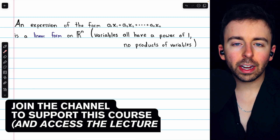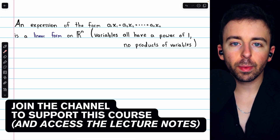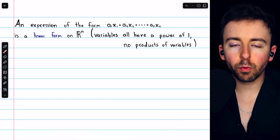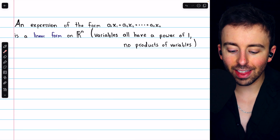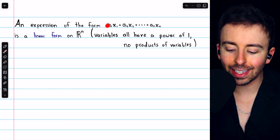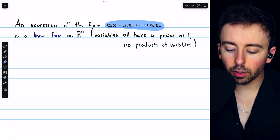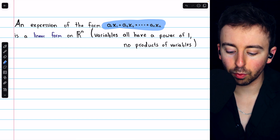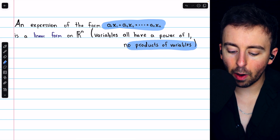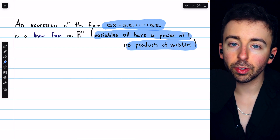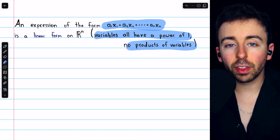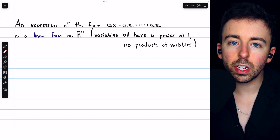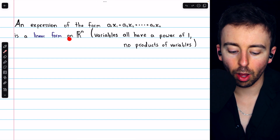We're going to introduce quadratic forms and how to write them in matrix notation. Before we look at what a quadratic form is, for contrast, this is what's called a linear form. It's a linear combination of coefficients multiplied by variables with powers of 1. There's no products of variables, and all the variables are to the first power. If there are n variables in the sum, we call it a linear form on R^n.